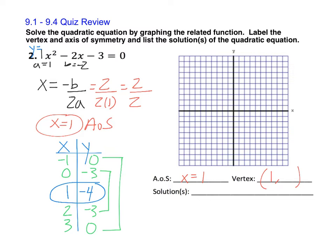Notice how the table is symmetrical — the vertex in the middle, and the values on each side match. Now we're ready to graph the parabola. I'll start by plotting the vertex at (1, negative 4), then draw the axis of symmetry as a dotted line down the middle. Then I'll plot the other points: (negative 1, 0), (0, negative 3), (2, negative 3), and (3, 0). Make a smooth U-shaped curve. For the solutions, we look at where the parabola crosses the x-axis — those are the x-intercepts. The parabola crosses at x equals negative 1 and x equals 3. You can also see in the table that those are the two x-values where y equals 0.